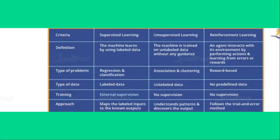In supervised learning, external supervision is present. In unsupervised learning, there is no supervision. The approach in supervised learning maps the labeled data to known outputs. In unsupervised learning it understands patterns and discovers the output — for example, it recognizes whether something is a flower, animal, or bird by recognizing patterns. In reinforcement learning, like with robots finding a path, if it goes correctly it is fine, if not it is improved again. It follows the trial-and-error method.